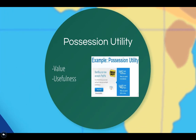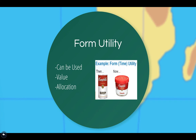Possession utility refers to the value or usefulness a customer derives from being able to take possession of a product. It is often influenced by payment terms — for example, credit and debit cards facilitate possession utility by allowing customers to purchase products without producing cash at the time of purchase. Form utility refers to a product being in a form that can be used by and is of value to the customer. Logistics can contribute to form utility through allocation, which allows for production at the ideal cost per unit and allocating that product across markets most efficiently.